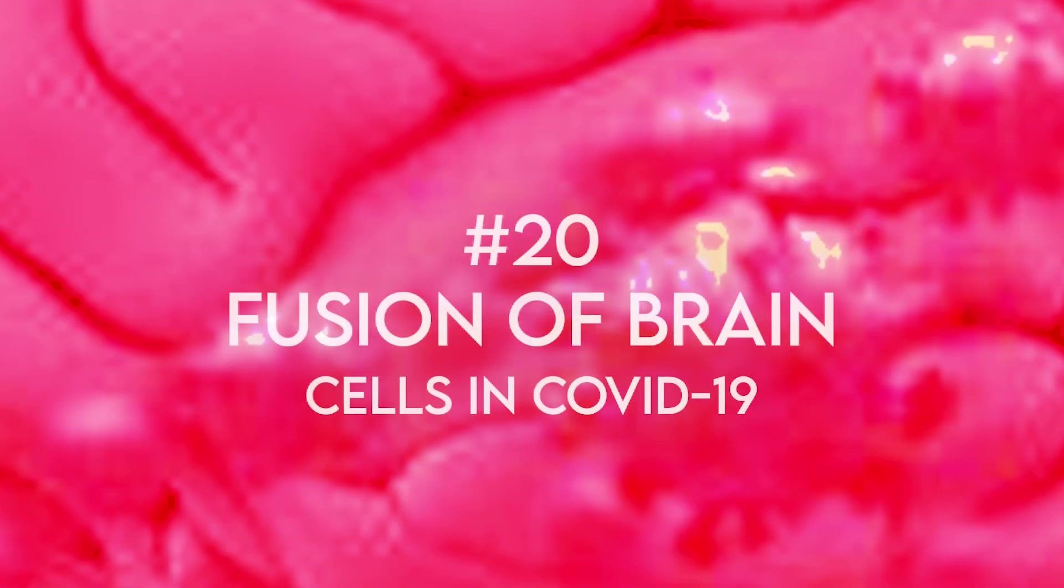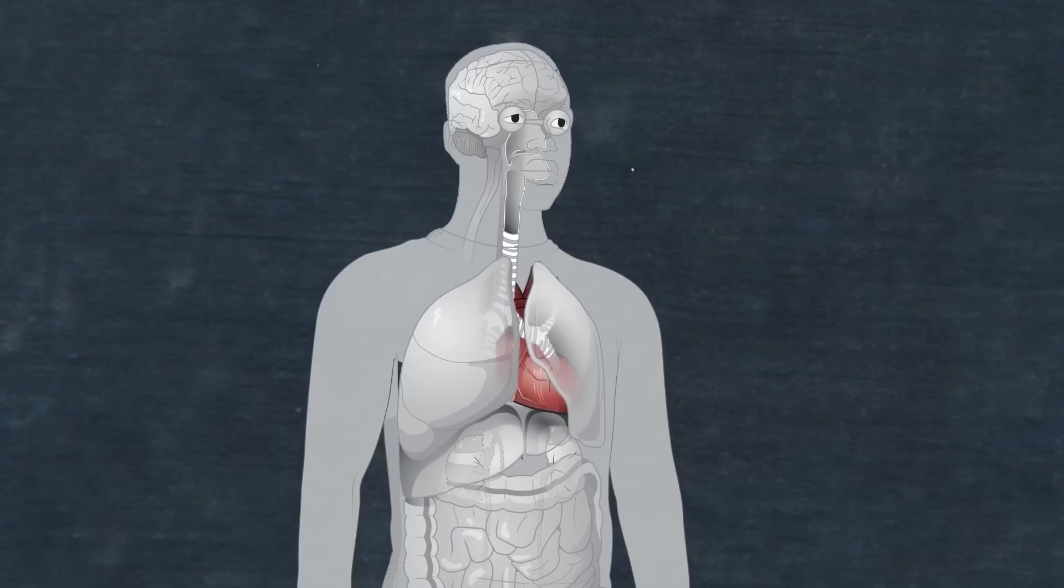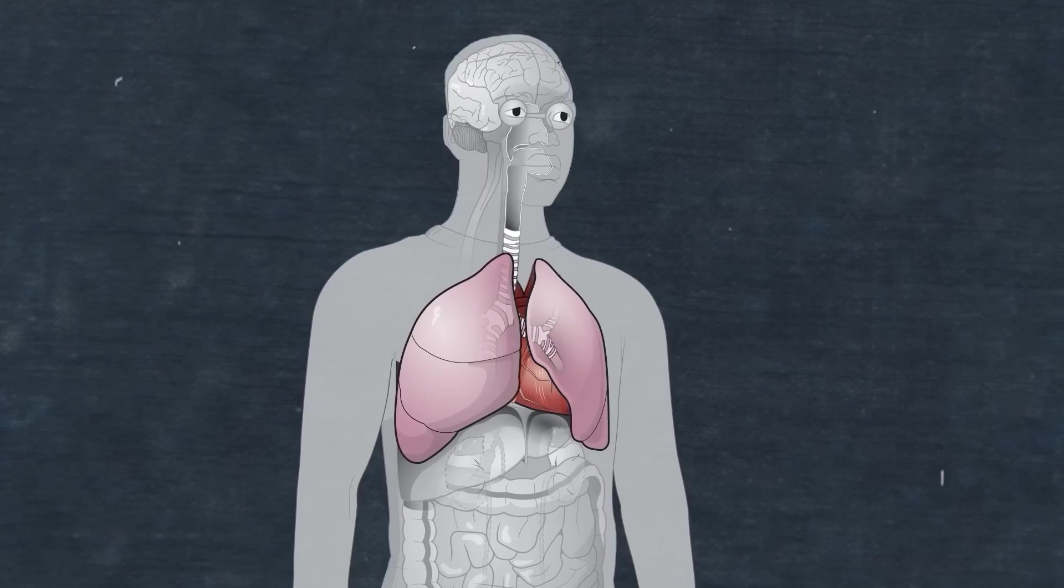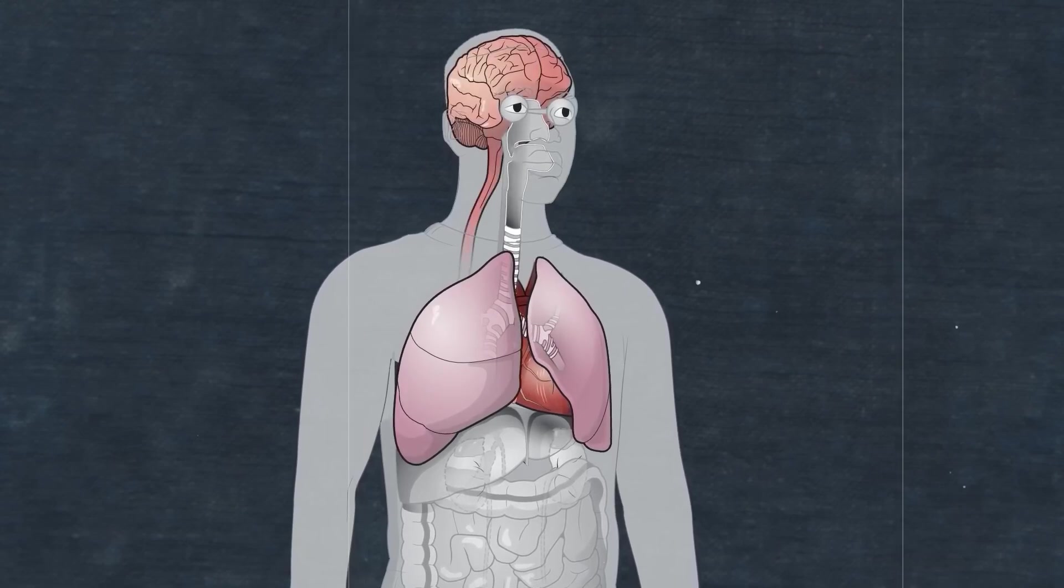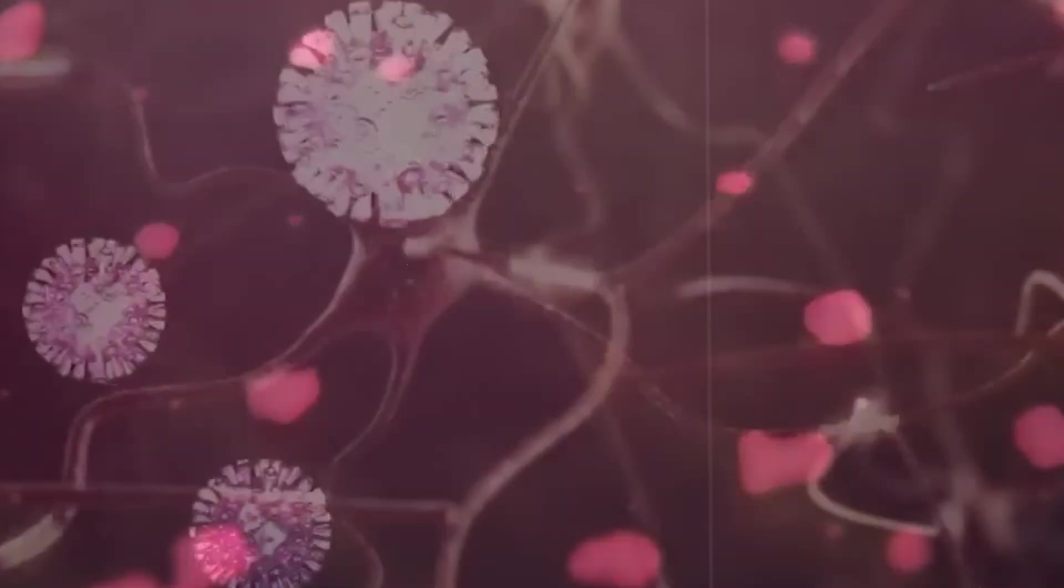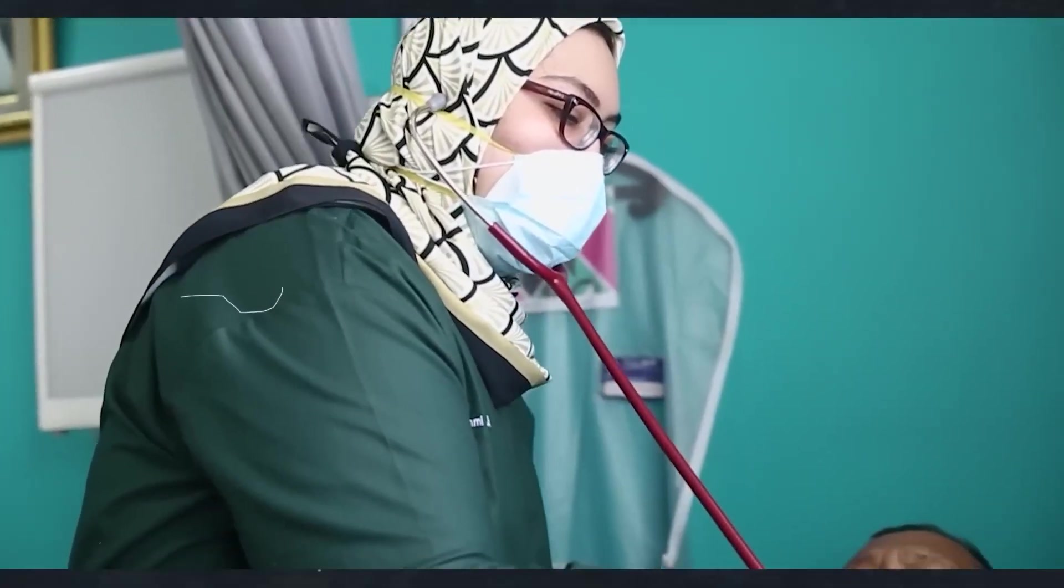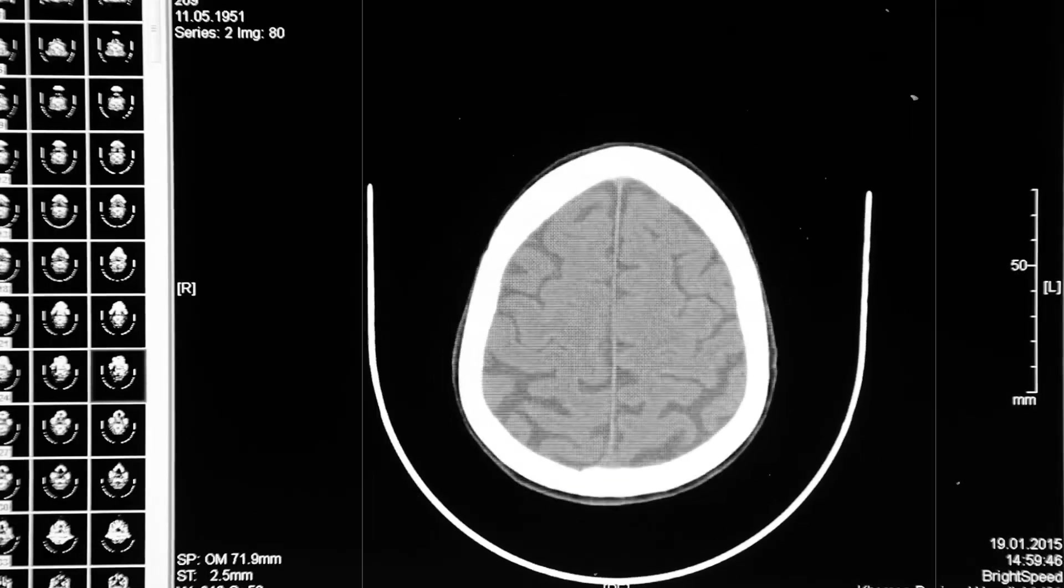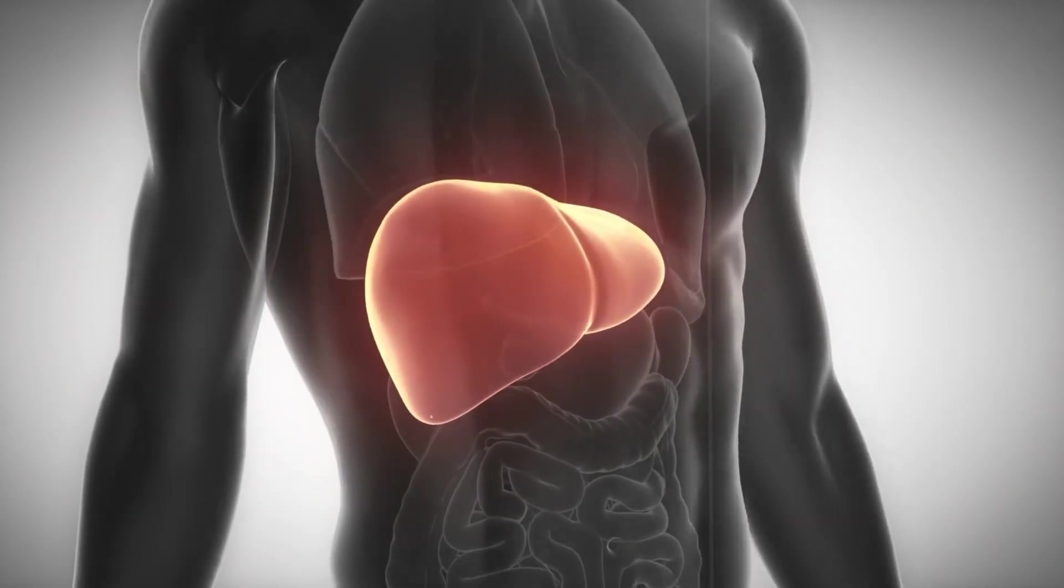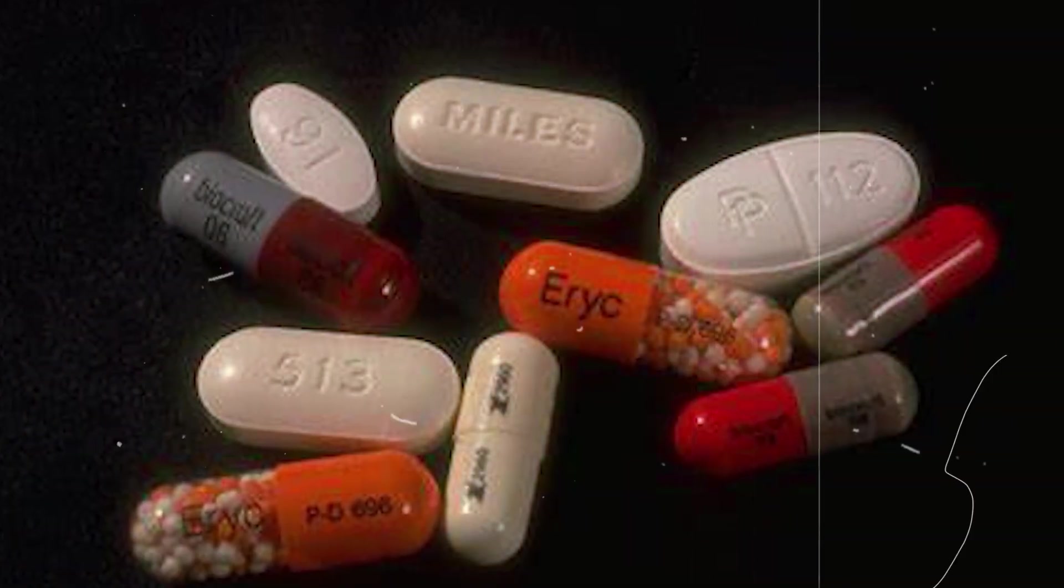Number 20. Fusion of brain cells in COVID-19. In order to disrupt normal function and potentially explain the neurological symptoms of COVID-19, researchers have found that the virus can induce brain cells to merge. This discovery clarifies the virus's impact on the brain and provides important hints for managing some patients' chronic cognitive problems. It's a tiny twist that has significant effects on brain function. Thankfully, AI is back again, this time cooking up brand new antibiotics from scratch.